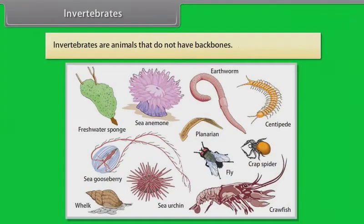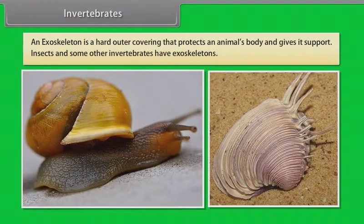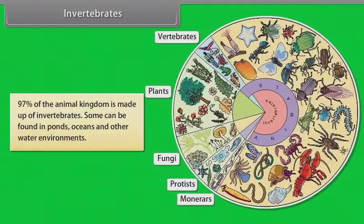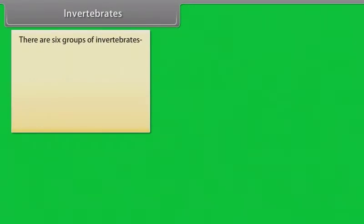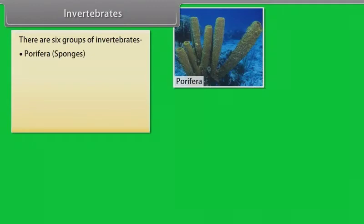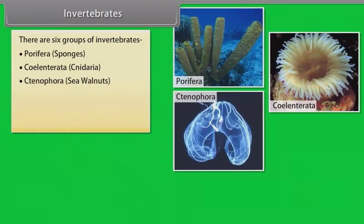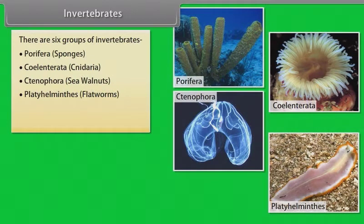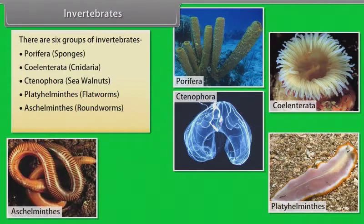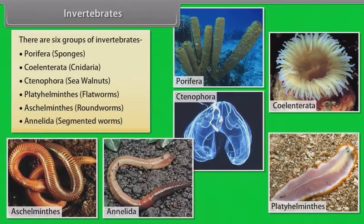Invertebrates are animals that do not have backbones. An exoskeleton is a hard outer covering that protects an animal's body and gives it support. Insects and some other invertebrates have exoskeletons. Ninety-seven percent of the animal kingdom is made up of invertebrates. Some can be found in ponds, oceans and other water environments. There are six groups of invertebrates: Porifera (sponges), Coelenterata (cnidarians), Ctenophora (sea walnuts), Platyhelminthes (flatworms), Aschelminthes (roundworms), and Annelida (segmented worms).